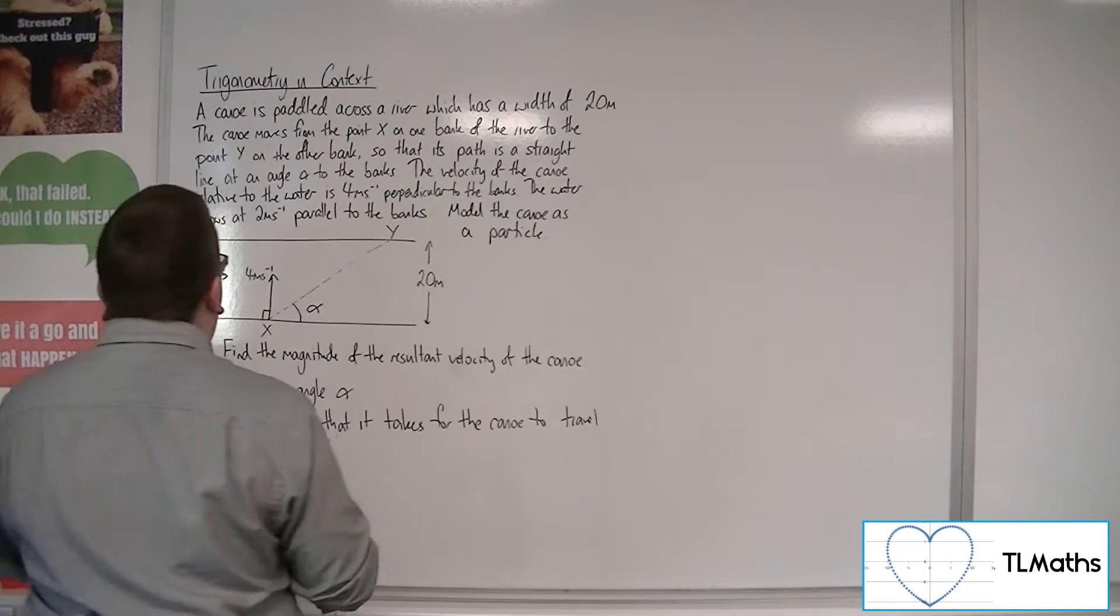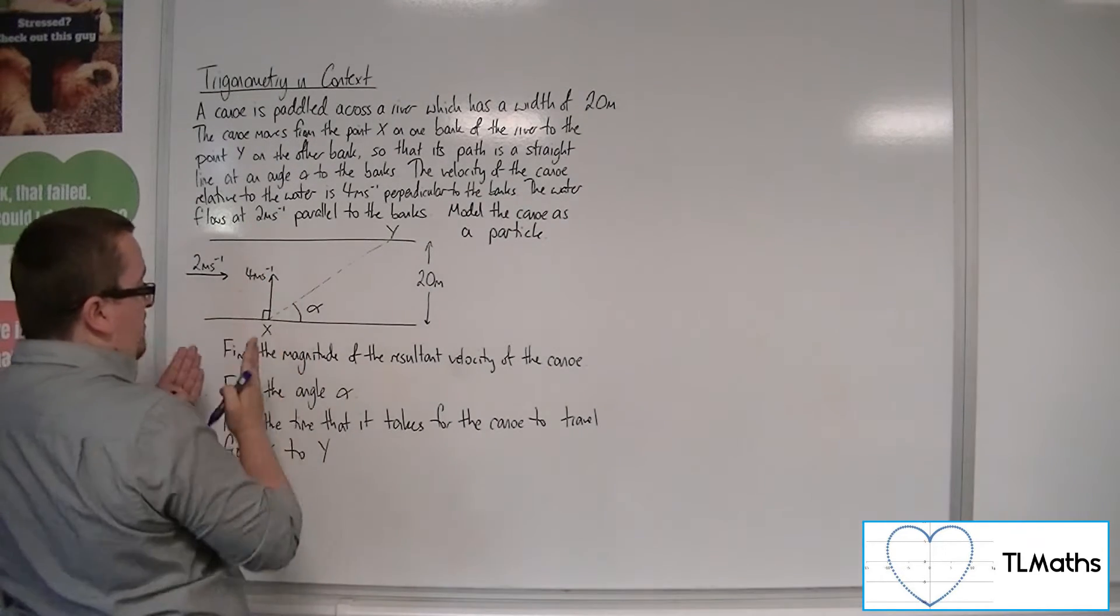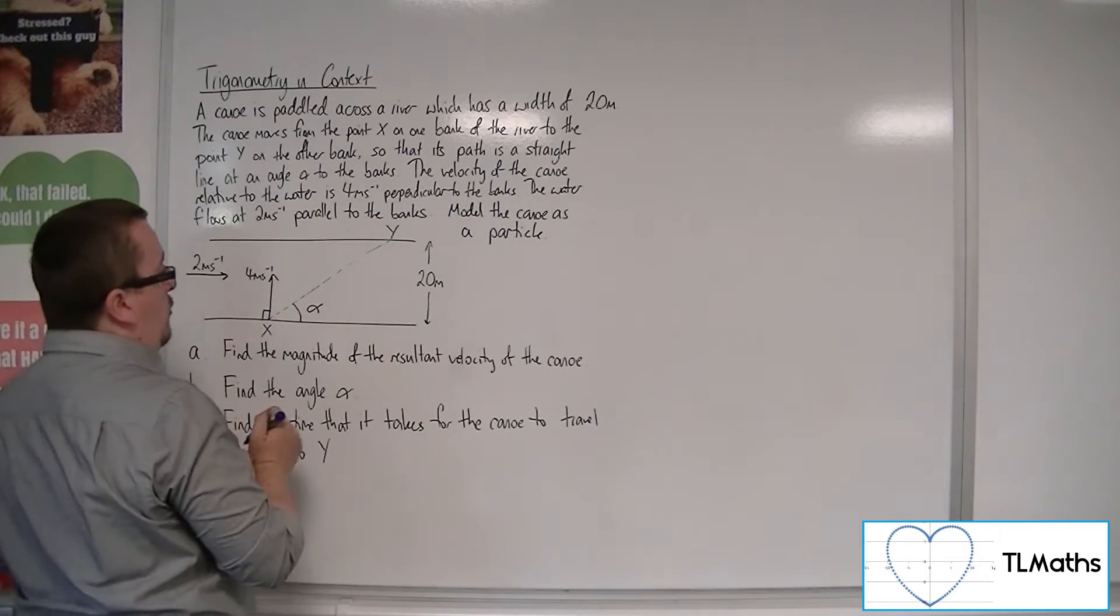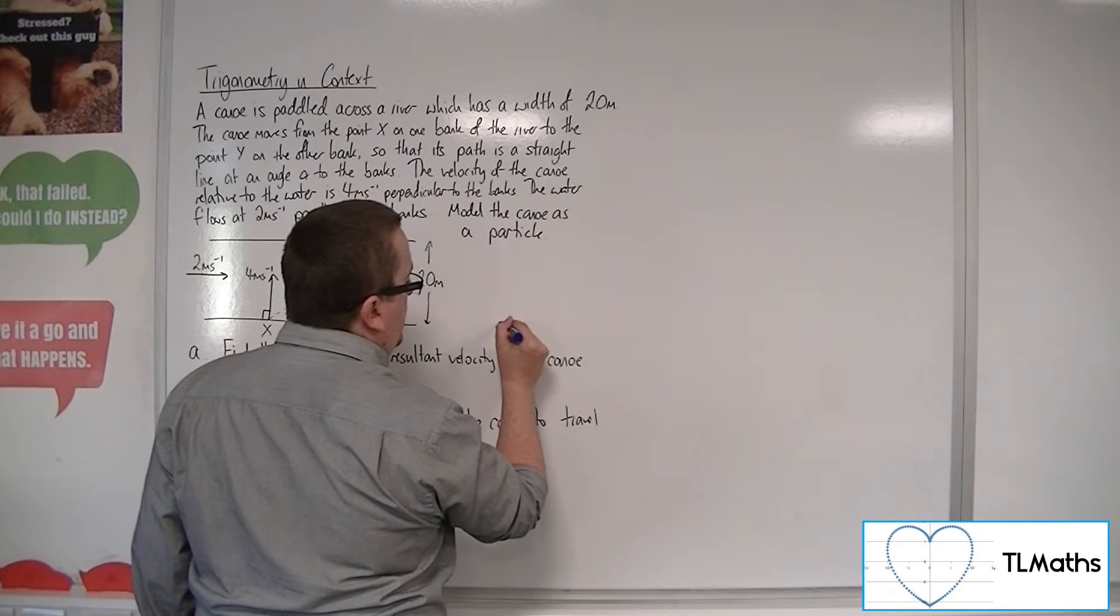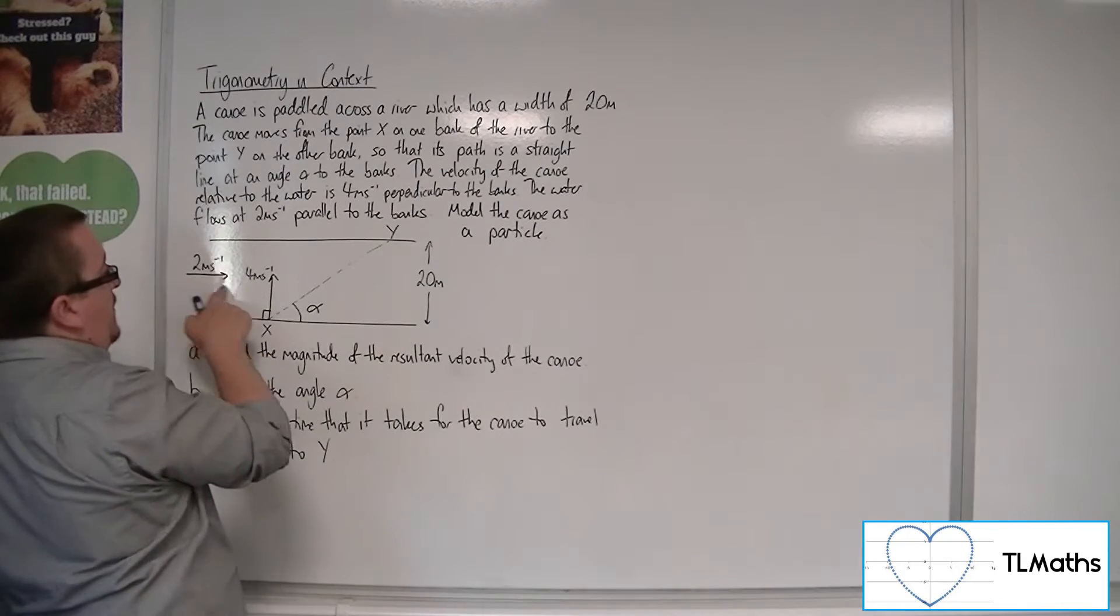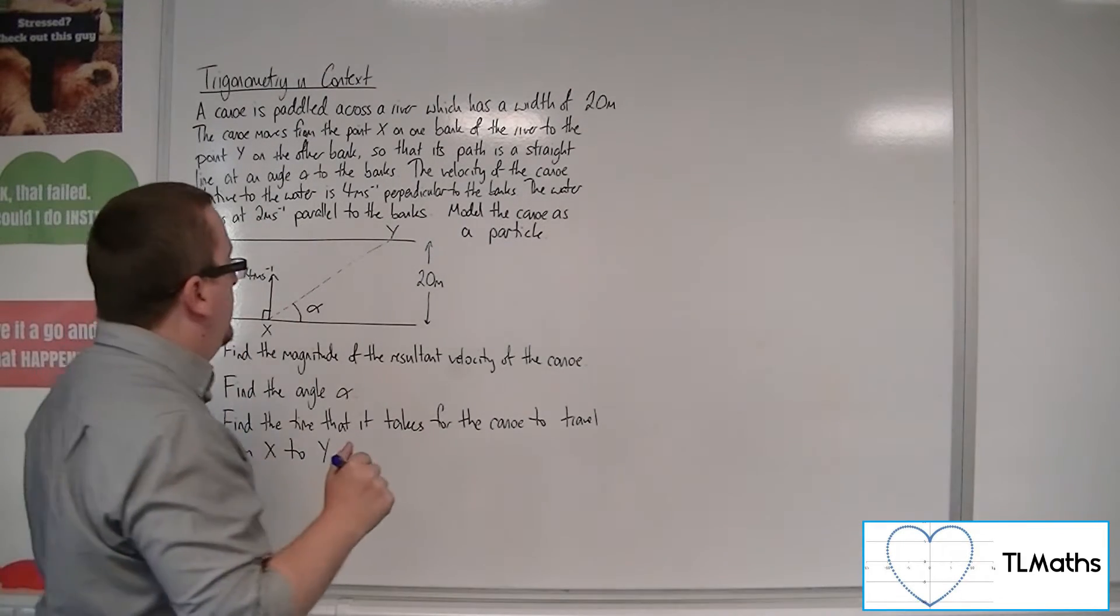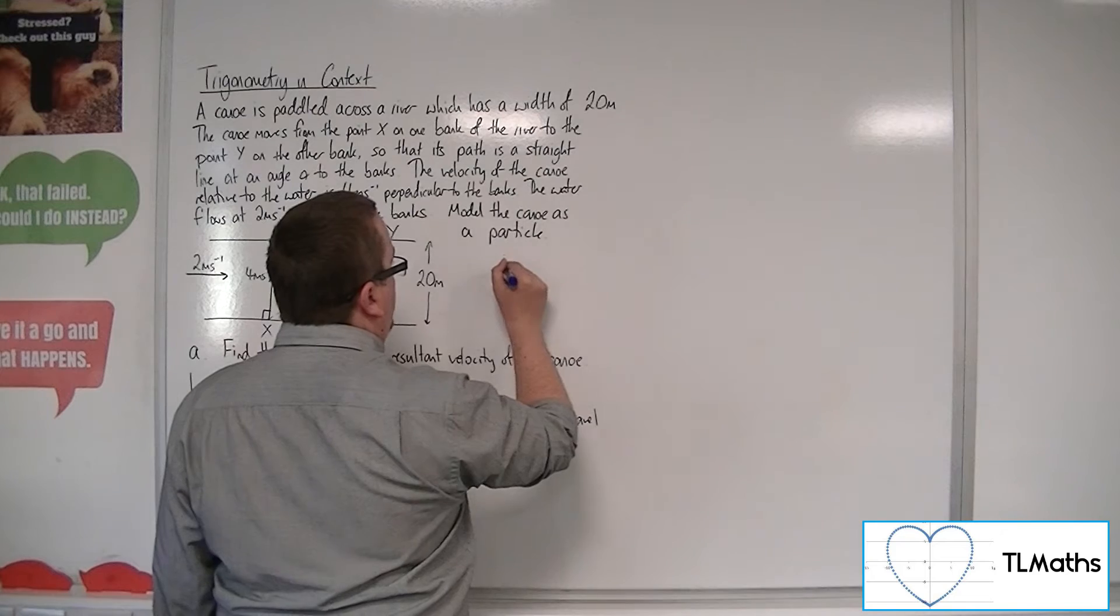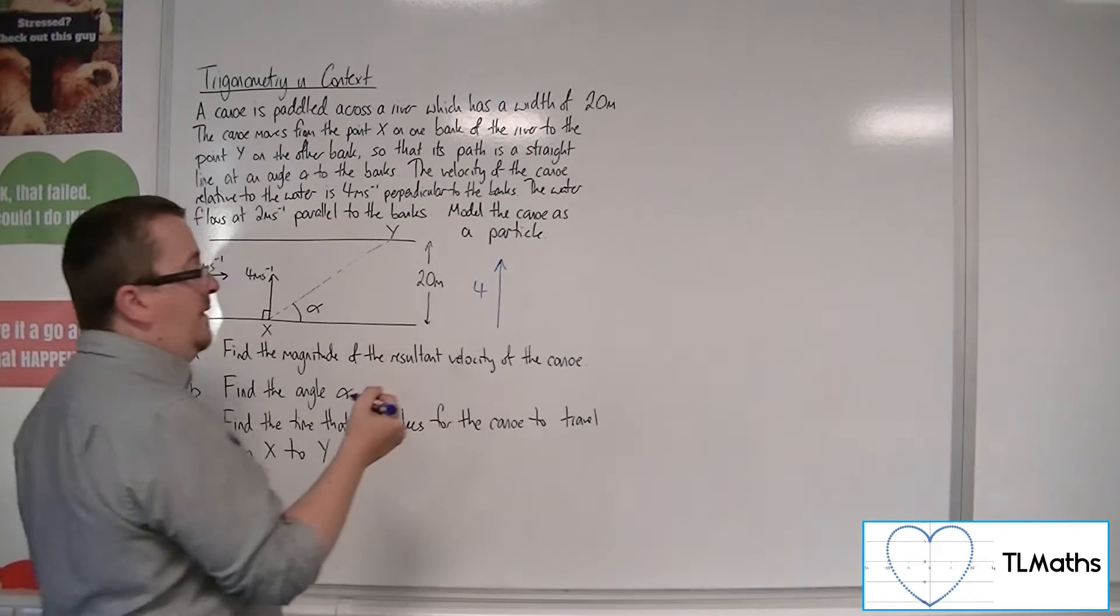Now, seeing as the canoe is going perpendicular, has aimed itself perpendicular to the banks, it's going at 4 meters per second, we can draw ourselves a right-angled triangle here, alongside with the fact that the water's traveling at 2 meters per second parallel to the banks. So effectively you've got this picture, where you're traveling 4 meters per second in that direction.